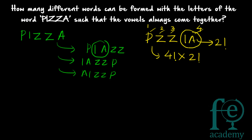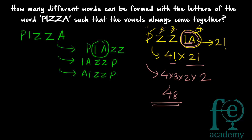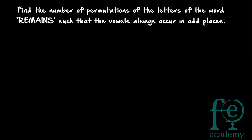Since I and A should always come together, consider them as a single entity. You have four different letters to arrange in 4! ways, and the two letters I and A can be arranged among themselves in 2! ways. So the final solution is 4! × 2! = 4 × 3 × 2 × 1 × 2 = 24 × 2 = 48. So 48 is your final answer.